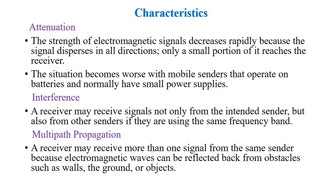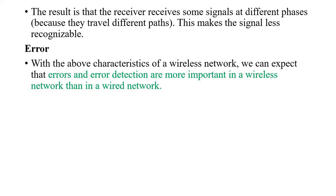Another radio propagation mechanism is multipath propagation, where the receiver may receive more than one signal from the same source because electromagnetic signals can get reflected, diffracted, or scattered on the way to the receiver. Because of these effects, the receiver gets different time-displaced signals. Due to these characteristics of the wireless network, we can expect errors, and error detection is more important in wireless networks than in wired networks.